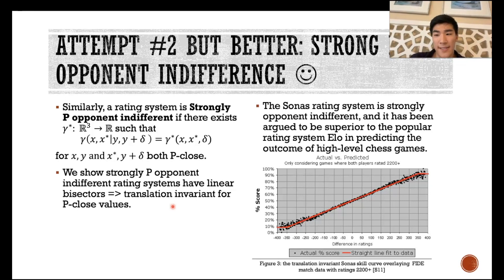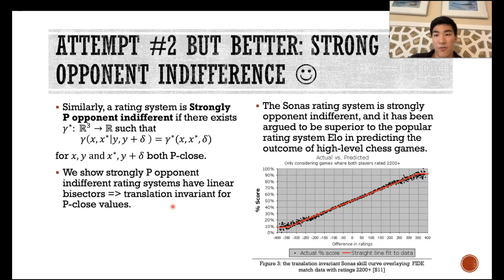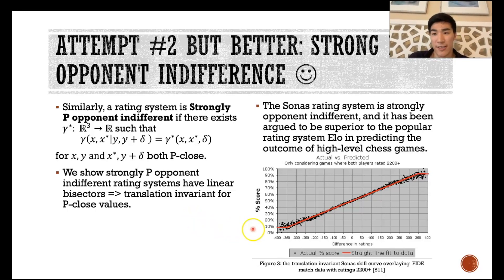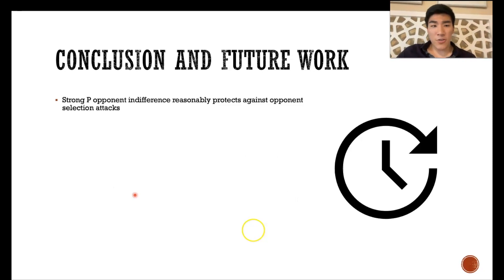The more important result is that these types of rating systems have shown some practical utility. The Sonus rating system has been argued by Jeff Sonus to be superior to ELO in predicting the outcome of high-level chess matches. In this graph, you can see the thresholded linear skill curve, which the Sonus rating system uses, matching the results of high-level chess matches very closely.